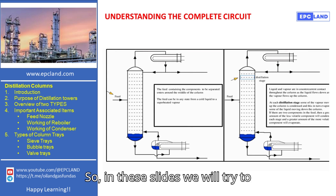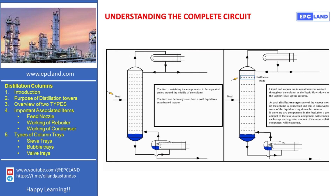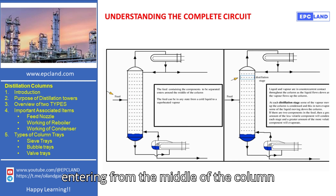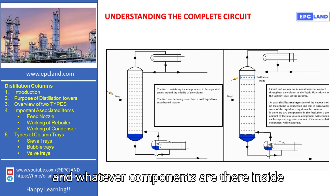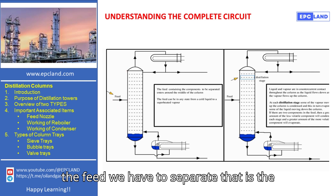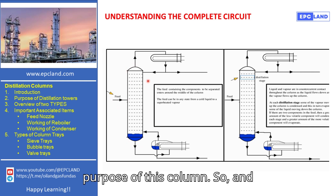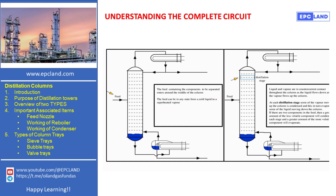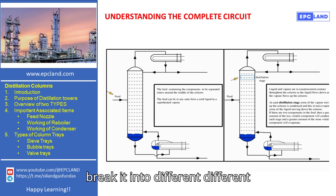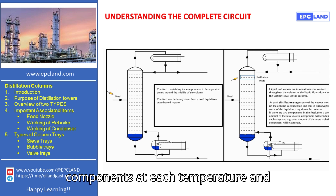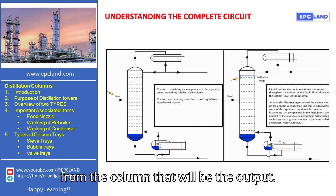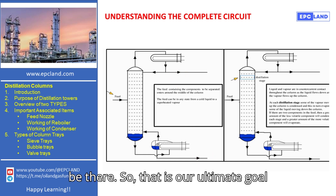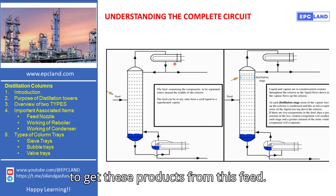In these slides we'll try to understand how this column is working. The feed is entering from the middle of the column, and whatever components are there inside the feed, we have to separate — that is the purpose of this column. This feed can be in the form of cold liquid or it can be a superheated vapor. Whatever is entering, we'll try to break it into different components at each temperature and pressure stage and separate it from the column as the output.